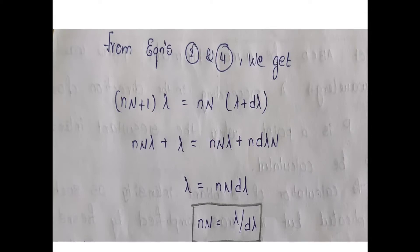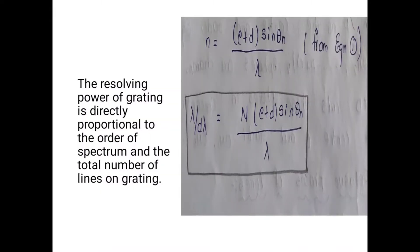From equations 2 and 4 we get: n * (N + 1) * lambda = n * N * (lambda + d_lambda). Solving this, n * N * d_lambda = lambda, therefore n * N = lambda / d_lambda. Substituting the value of small n from equation 1 into the resultant equation: lambda / d_lambda = N * (e + d) sin(theta_n) / lambda.